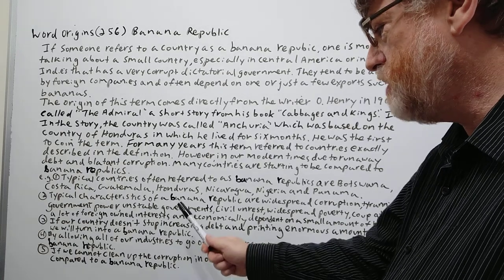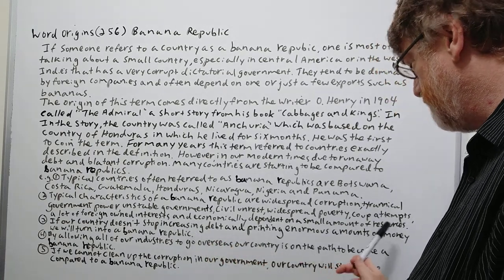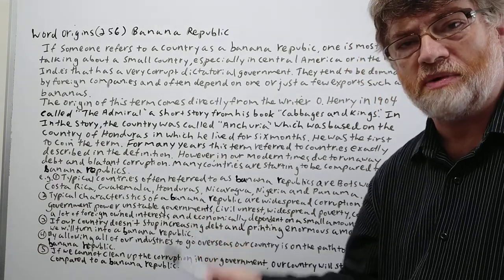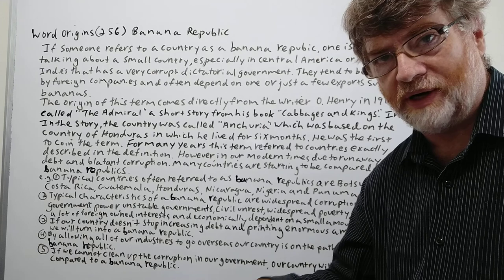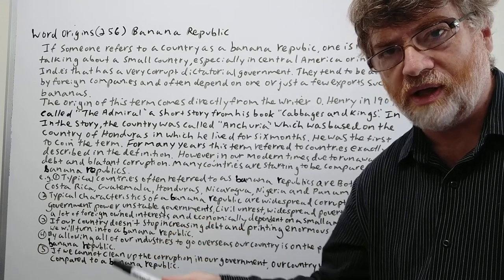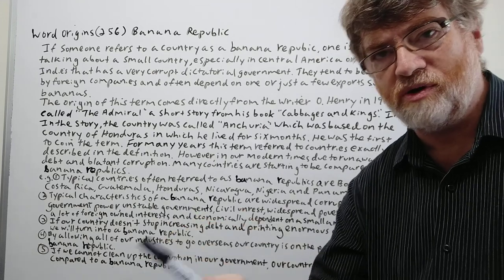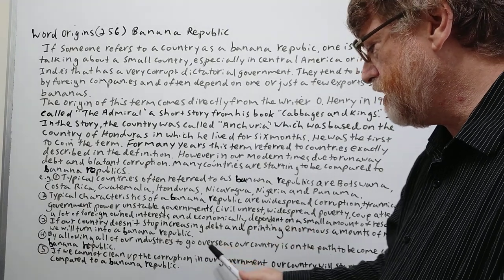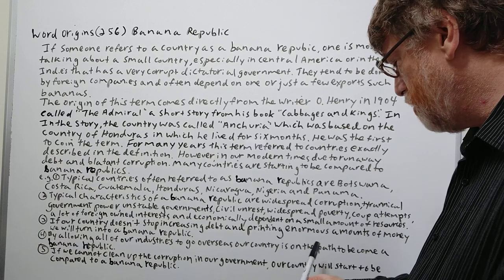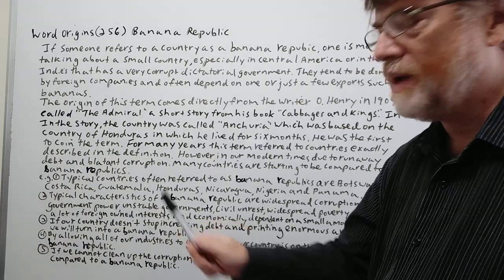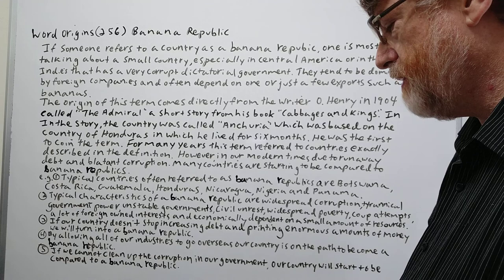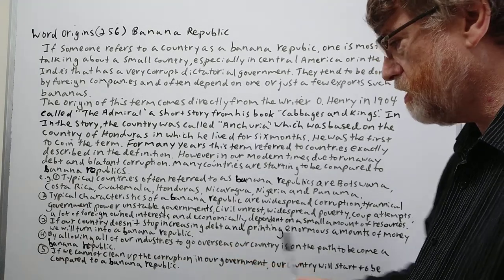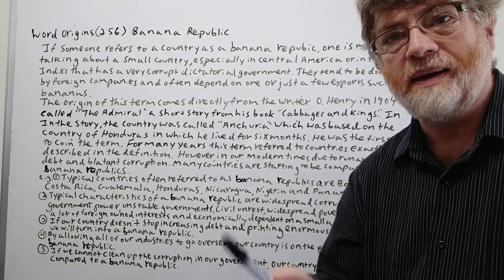If our country doesn't stop increasing debt and printing enormous amounts of money, we will turn into a banana republic. Countries that weren't like even Western industrial countries are starting to be compared to banana republics. By allowing all of our industries to go overseas, our country is on the path to become a banana republic. If we cannot clean up the corruption in our government, our country will start to be compared to a banana republic.